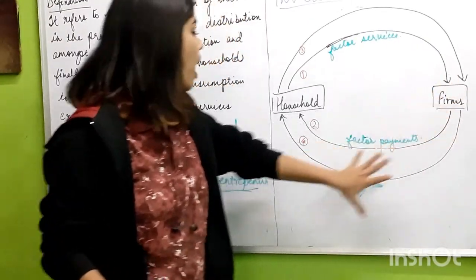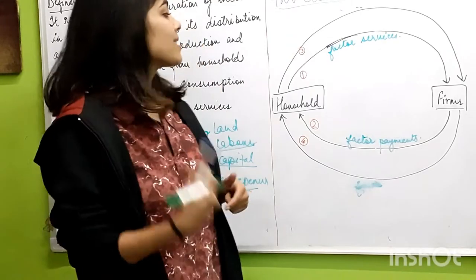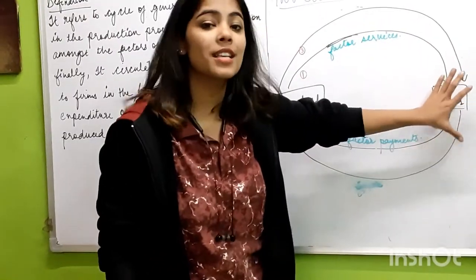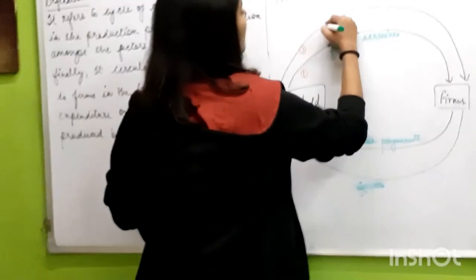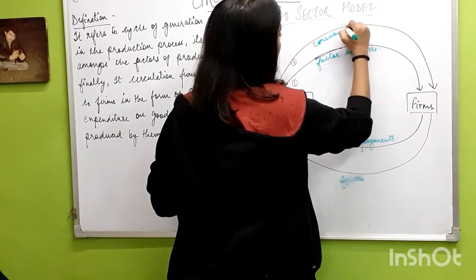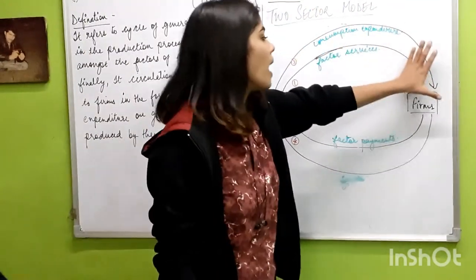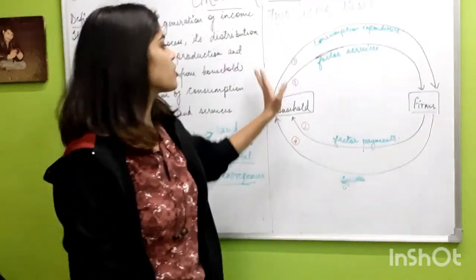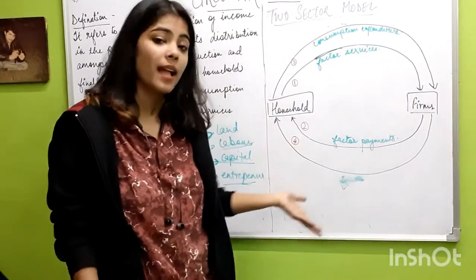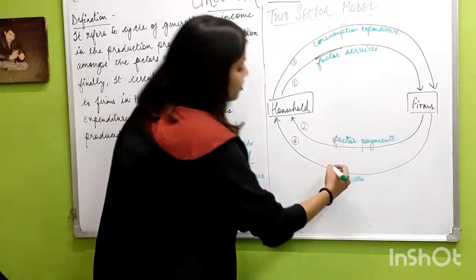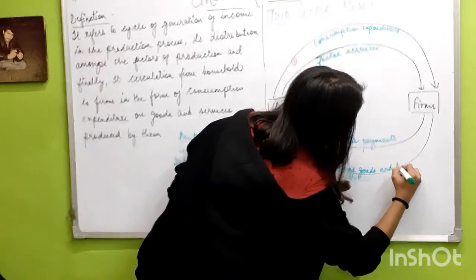When the firm has made factor payments to the household, the household will engage in consumption. Firms produce goods and services, and the household consumes those goods and services. The household pays consumption expenditure to the firm, and in return there is a flow of goods and services from the firm to the household.